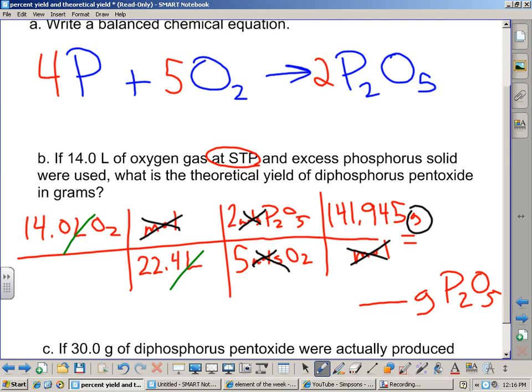Sig fig wise, how many should we have in our answer? Three. Okay, from either the 14.0 or the 22.4. What do we get mathematically here? Yeah, 35.5 grams there. You want to check your math. Okay. Other questions?